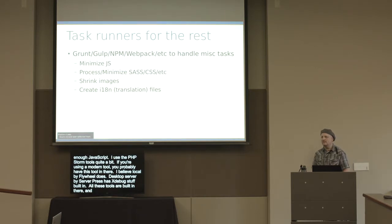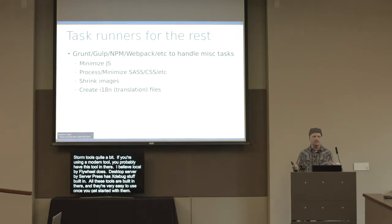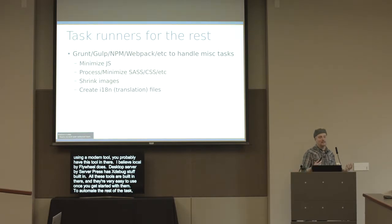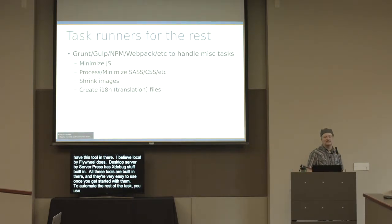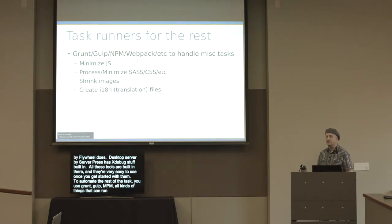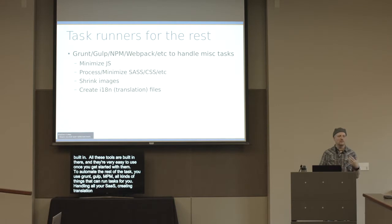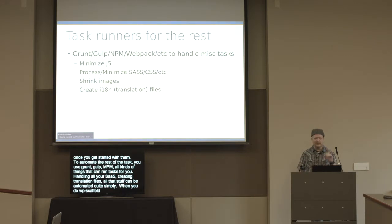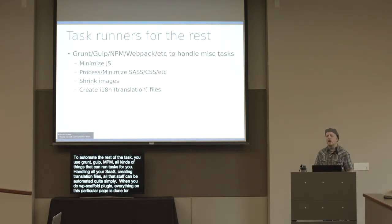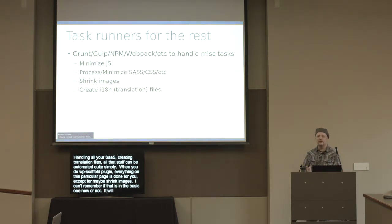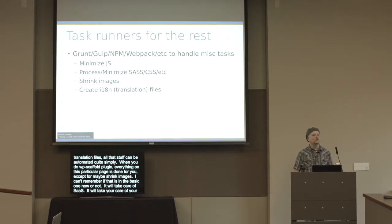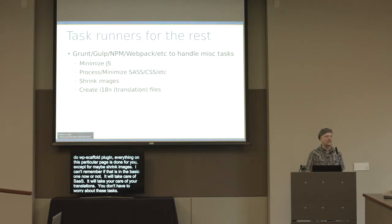For everything else, to automate the rest of the code, you use a task runner: Grunt, Gulp, NPM, Webpack, or Make. These can run tasks like minifying JavaScript, handling Sass, shrinking images, and creating translation files. Most of this is done out of the box when you run `wp scaffold plugin` — it'll handle JS minification, Sass, and translations. You don't have to worry about setting these up or distributing them when you deploy to WordPress.org.